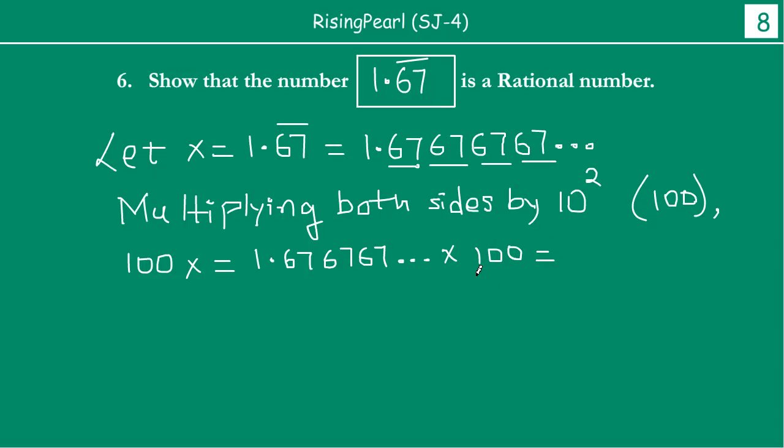Now notice what happens. The decimal number, this decimal point, will now shift two places because we are multiplying by 100. There are two zeros, so the decimal point will shift two digits to the right. So this number will become something like 167.676767...